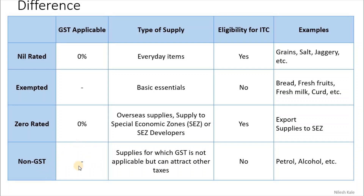Non-GST supplies do not attract GST — these are supplies for which GST is not applicable but can attract other taxes. You don't have ITC on these. For example, alcohol — you are paying taxes on alcohol but not GST. You are paying taxes on petrol but not GST, because they are non-GST items.